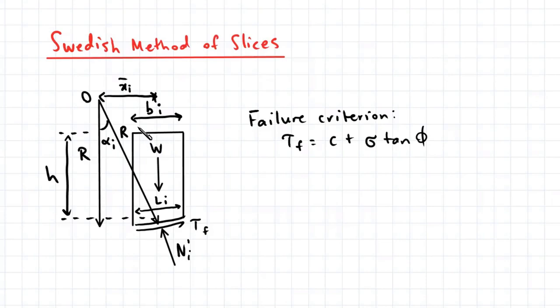There are also forces which are acting on our slice. A force due to the weight of the slice is denoted by W. We also have a resisting shear force acting at the base of the slice, denoted by TF, and we also have a normal force denoted by N. This slice also has dimensions: the width at the top of the slice is denoted by B, the height of a slice is denoted by H, and the arc length at the base of a slice is denoted by L.